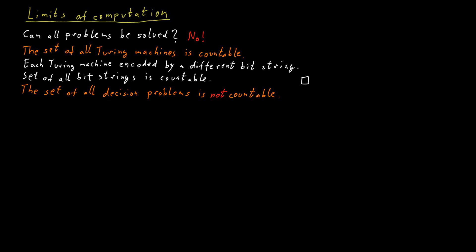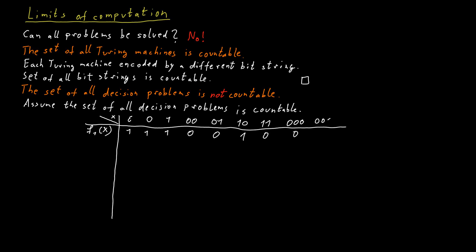We can prove this using a technique called diagonalization. Assume for contradiction that the set of all decision problems is countable. For example, the first function, let's call it f1, could be written in a table that has an infinite number of columns as follows. So we write down what the result is of f1 of x for x being the empty bit string, maybe the result is 1. If x is just a 0, then it's 1. If x is 1, it's a 1. If x is a bit string of length 2 consisting of two 0s, then it's a 0, and so on. So for each input, we specify what the function value is.